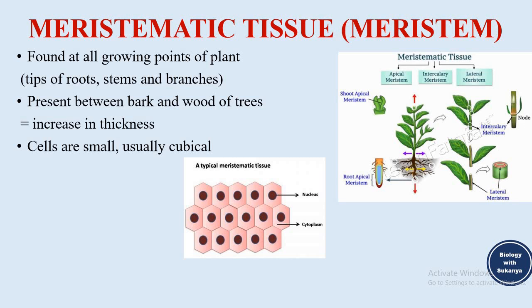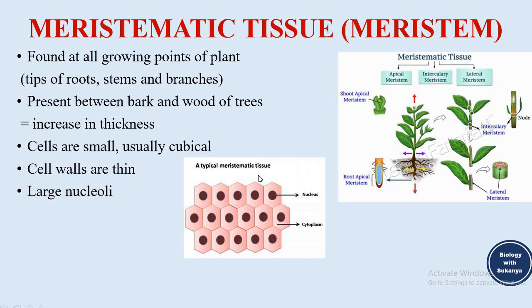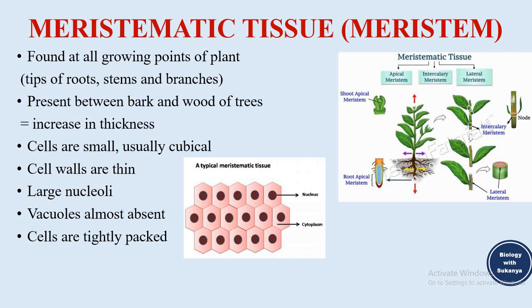Meristematic tissue cells are very small, usually cubical. The cell walls are thin. They have large nuclei — we can see that the nucleus is very large in these cells. Vacuoles are almost absent. Cells are tightly packed with no gap between them, and the cells are actively dividing. These are the characteristics of meristematic tissue.